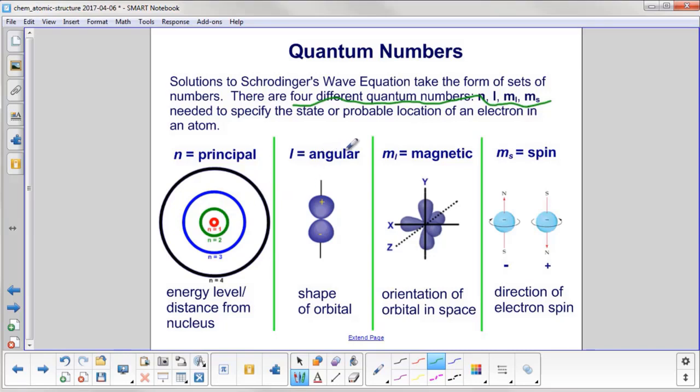l is your angular quantum number, and that tells you the shape of the orbital. That just means the electron is going to be found somewhere in this unusual shape here.